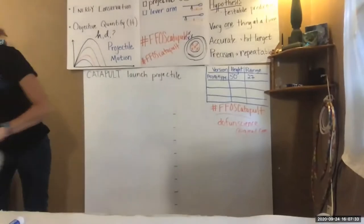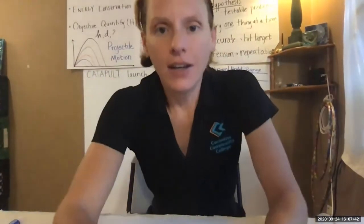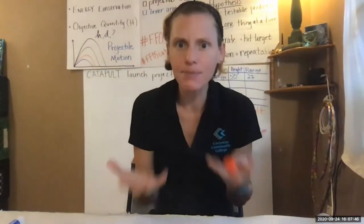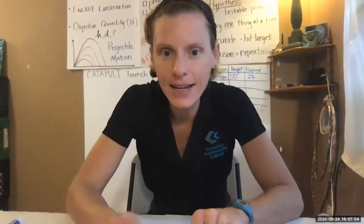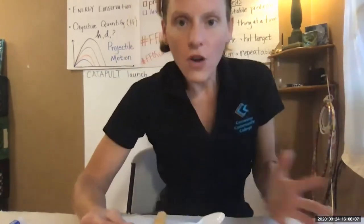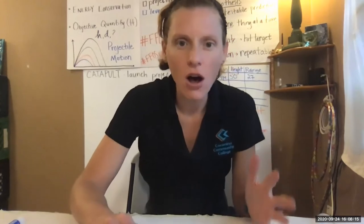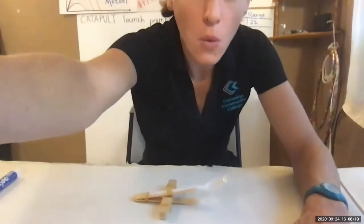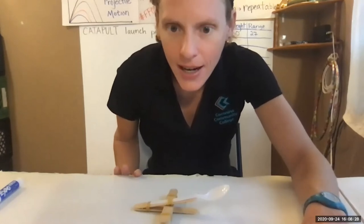Now we have our working prototype. We're going to think about the physics behind this catapult — this is our working model and we're going to see if we can change it. As we change different aspects of it, how is that going to change the height and distance we achieve? First question for physics: what is the energy here? Where is that energy coming from — the energy to launch that projectile?